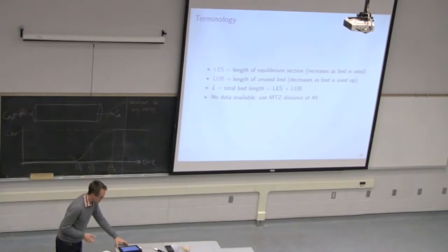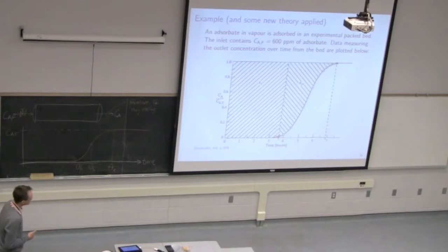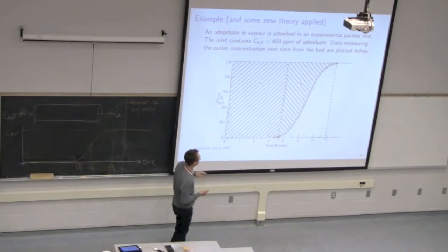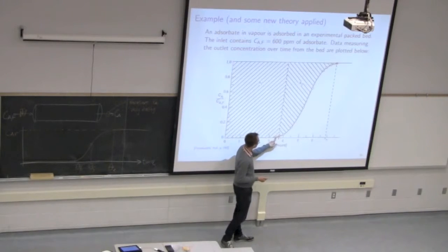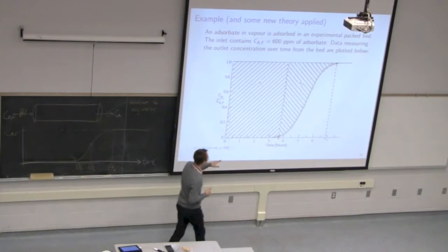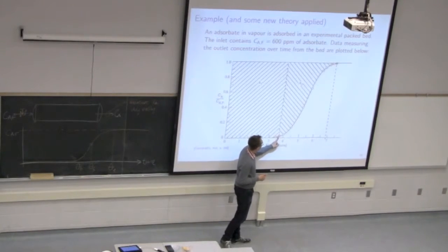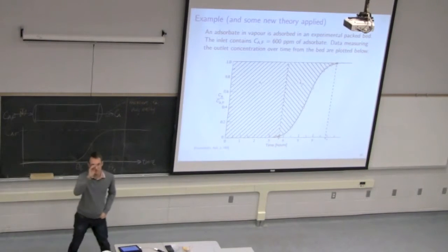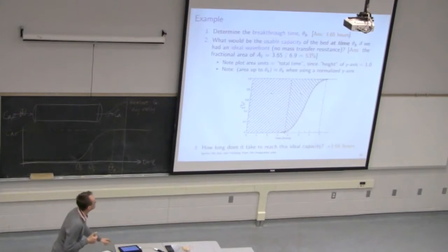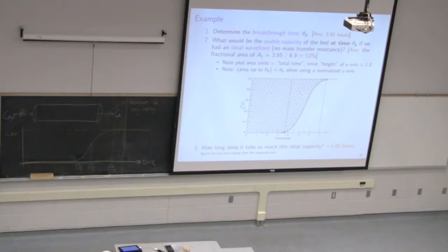Let's take a look at this particular problem where we're going to plot CA over CAF. CAF happens to be 600 ppm — parts per million. If you're watching this packed bed over time, you see nothing and then you see these data points. We're sampling at various points in time and we measure CA divided by CAF and we see that rise of the curve at about 3.6 hours. It then takes 6.9 hours to reach CAF. What is the breakthrough time? It's 3.65 hours.